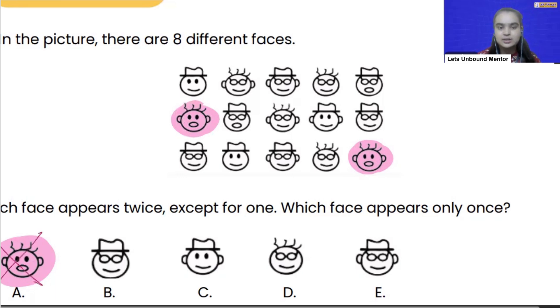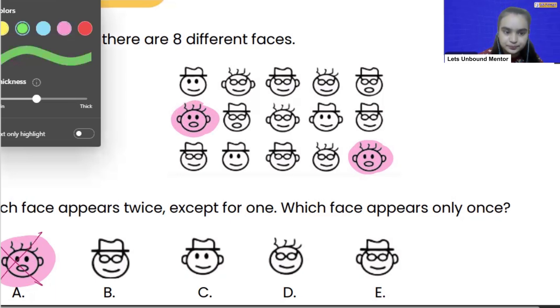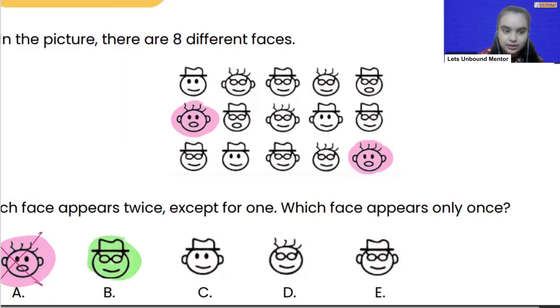is not our correct answer because it appeared two times in the question. Now let's see the second shape. So the second face is this one, right? And we have another one here. So that means option B is also not correct because it appeared two times. Now let's see the third face.